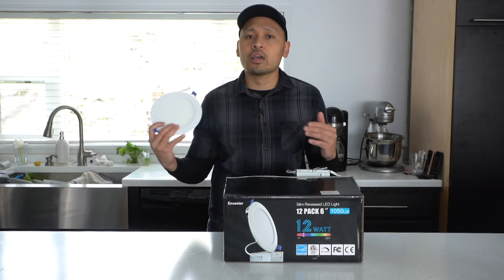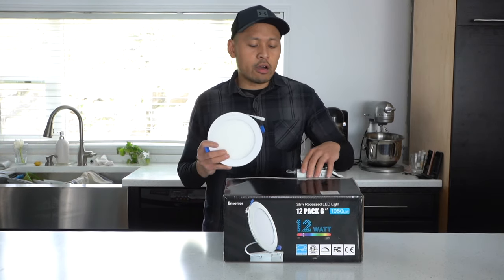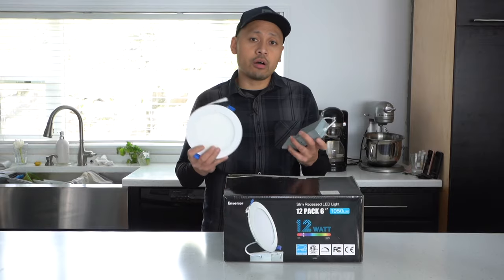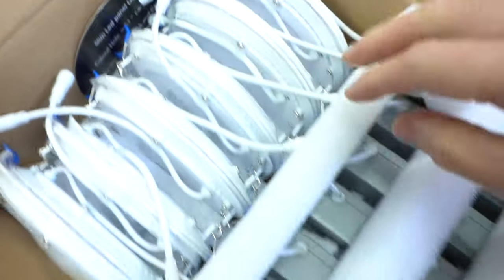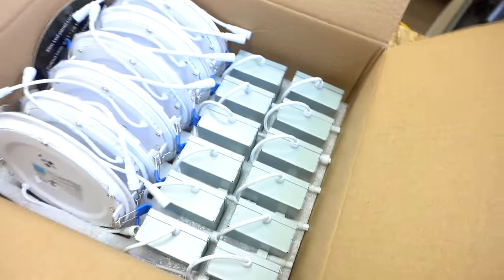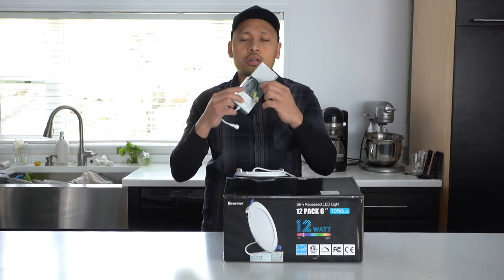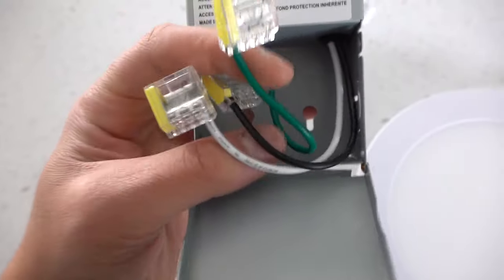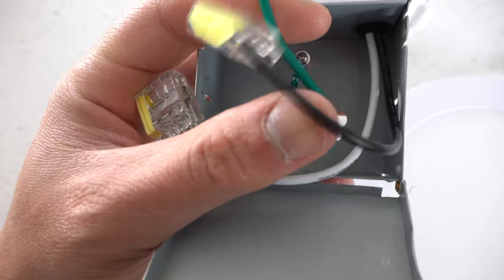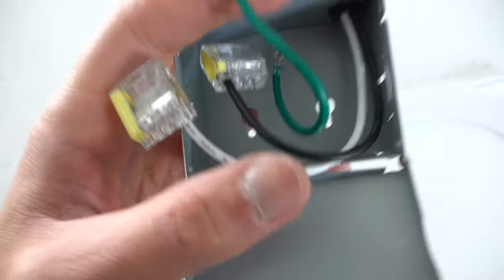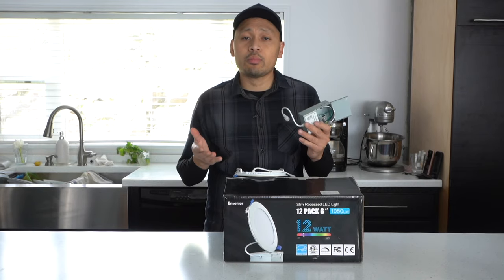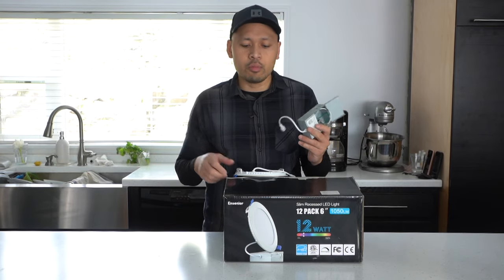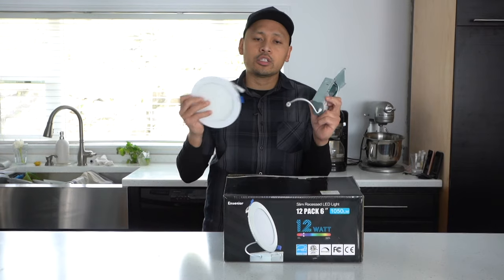Now it also comes with 12 pot lights and 12 of these J boxes. Now these J box connectors already have all the necessary wiring and connectors that you need. It comes with the ground, the hot black, and the neutral white to just do a plug and play from your main power, your existing main power on your can lighting if you have them, and to direct connection to the pot light itself.